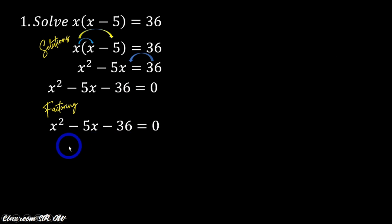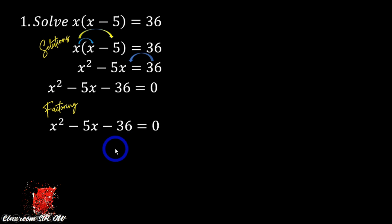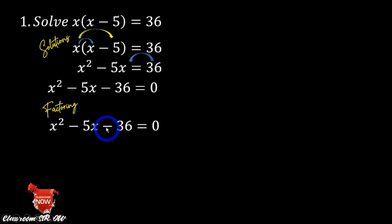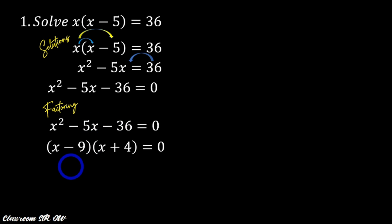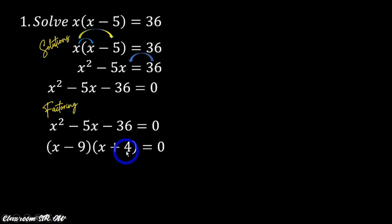So in factoring, recalling that x squared minus 5x minus 36 equals zero, we will look for two factors — maghahanap tayo ng dalawang factors — na kung i-multiply natin is negative 36, and if we add them, the result should be negative 5. So that is (x minus 9)(x plus 4) equals zero, because negative 9 times 4 is negative 36, and negative 9 plus 4 is negative 5.